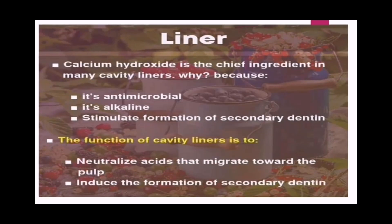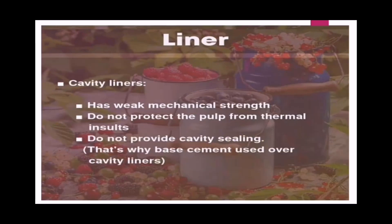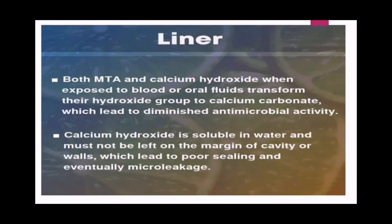Liner: calcium hydroxide is the chief ingredient in many cavity liners because it is antimicrobial, has an alkaline medium, and stimulates the formation of secondary dentine. The function of the cavity liner is to neutralize acids that migrate towards the pulp and to induce the formation of secondary dentine. However, the cavity liner has weak mechanical strength, does not protect the pulp from thermal insults, and does not provide cavity sealing. That is why base cements are used over the cavity liner.